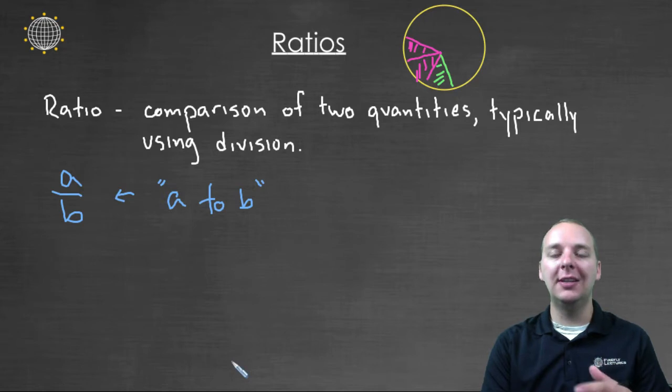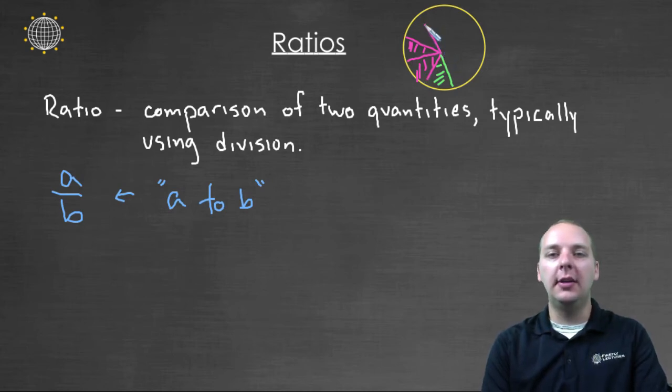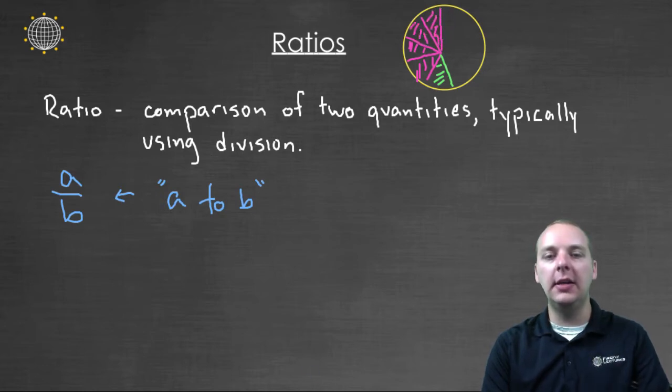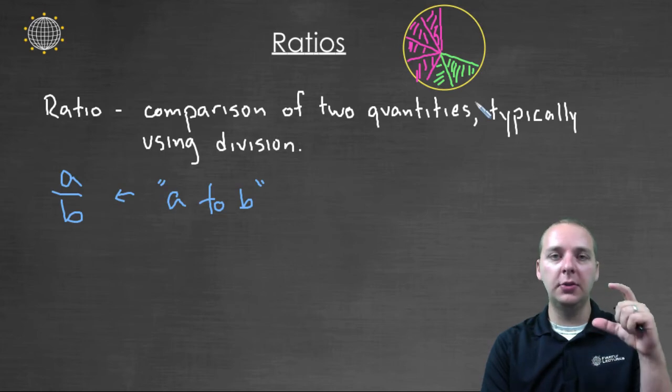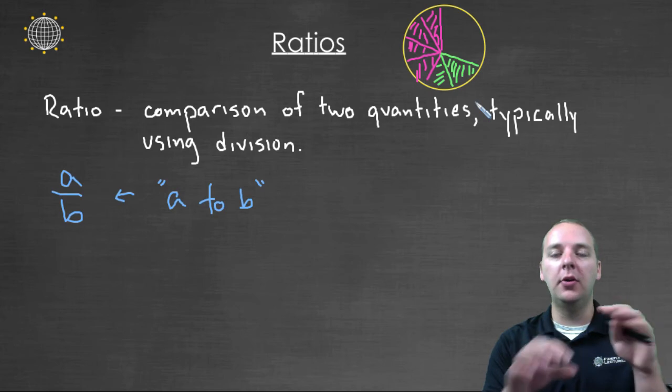And the nice thing about ratios is ratios stay equivalent even if you consider larger amounts. For example, if I now suddenly got hungry and wanted to eat four slices of pizza, that would be equivalent to my son eating two slices of pizza. If that ratio stays the same, then the quantity or the comparison would stay equivalent, even if the individual numerical values increased.